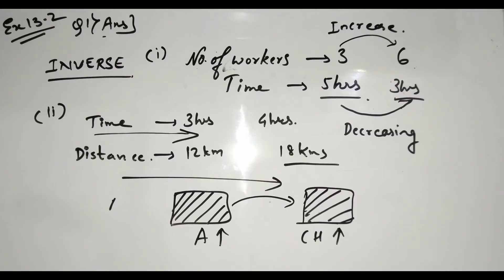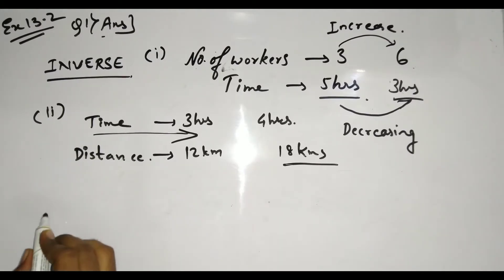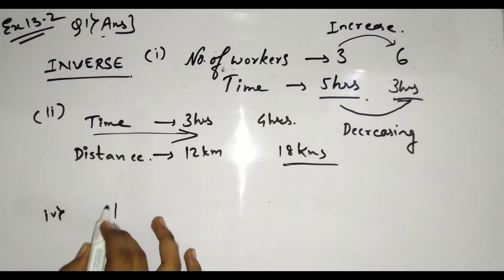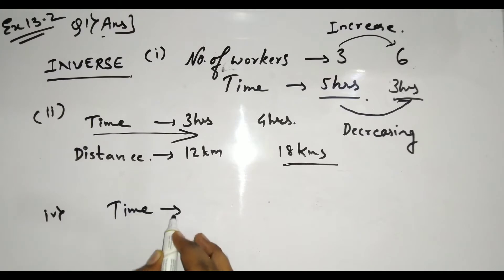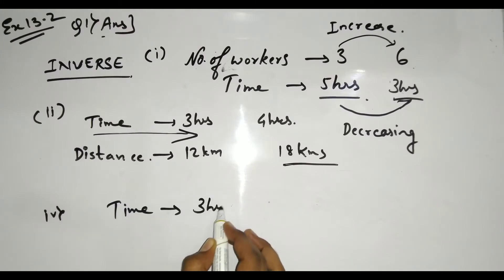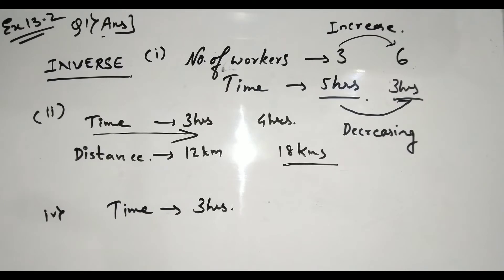The fourth one: time taken for a fixed journey and the speed of the vehicle. We'll take an example — time taken for a fixed journey is 3 hours. Note that the distance is fixed; we are comparing time and speed.